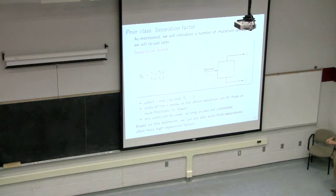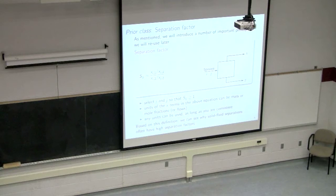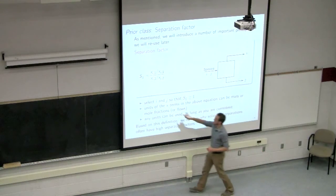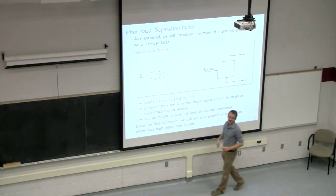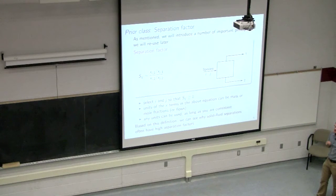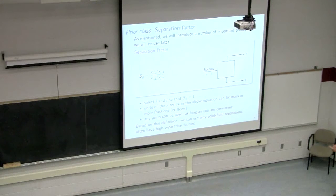Species I and J are chosen as the two species being separated — for example, if separating water from sand, water is I and sand is J. The only requirement is that you assign I and J so that the separation factor Sij is greater than one. Sij has a minimum value of one. If you get a value less than one, just flip the order of I and J and you'll get a value greater than one.